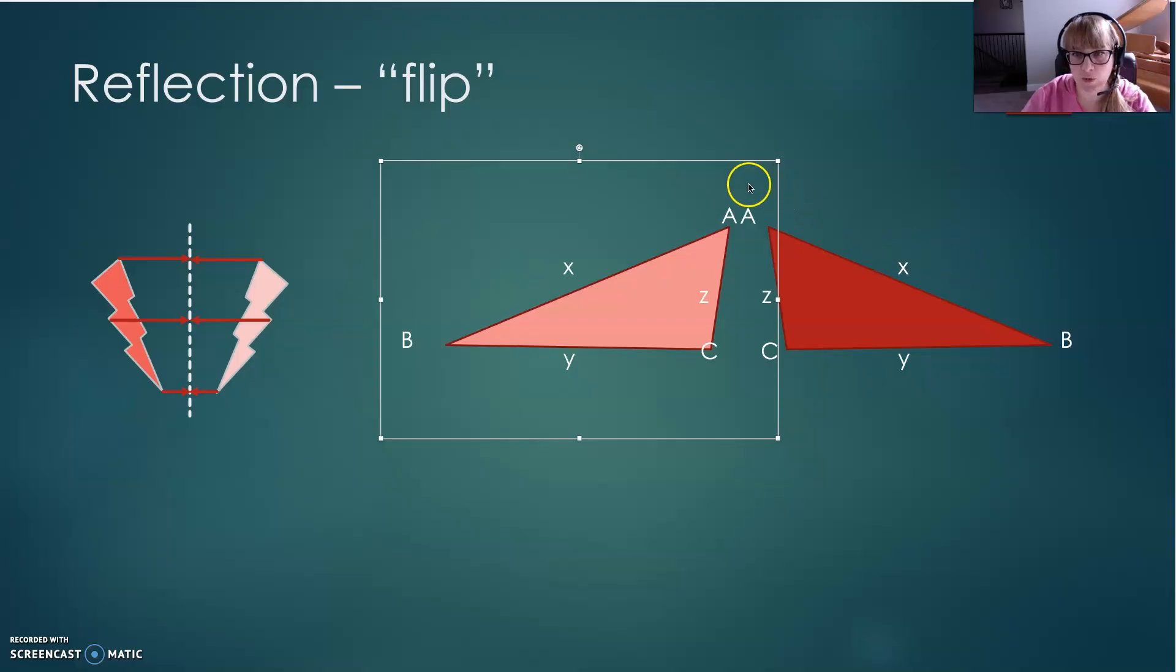I simply reflected it over what would be the y-axis, but angle A is still going to be the same as angle A, angle B is still the same as angle B, angle C the same as C, and even our side lengths didn't change. X is still the same length as X, and so on.